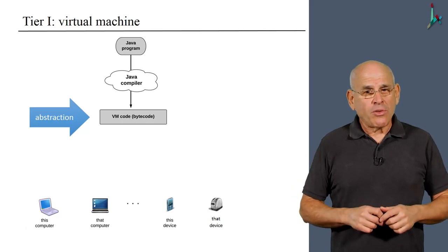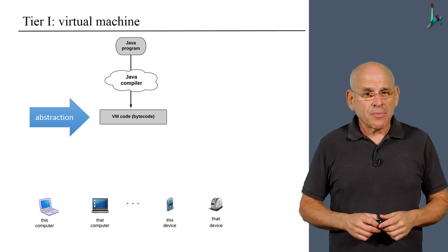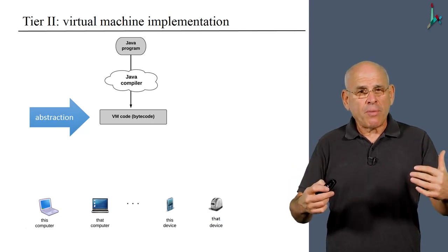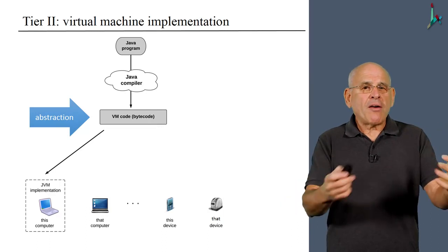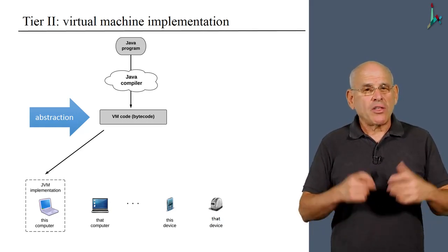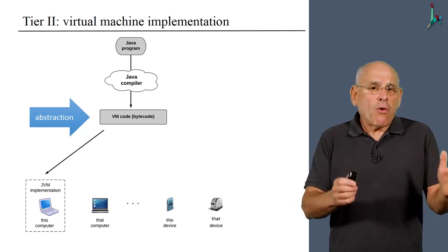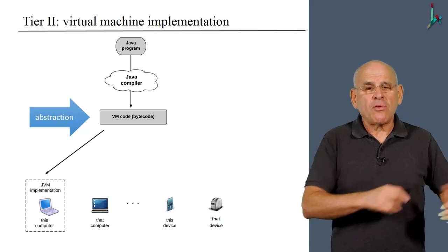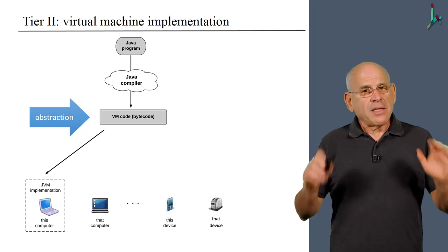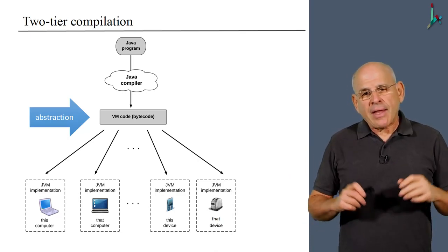If we want to actually execute this bytecode, we have to translate it further into machine language. We have to realize it on some real von Neumann machine or some real hardware device. In order to do this, we need the tier two. The second tier or the bottom tier of the compilation process, in which we equip the target device with something called JVM implementation in the world of Java, the Java machine implementation. The JVM implementation is a program that takes bytecode and translates it finally into the target code of the target platform.